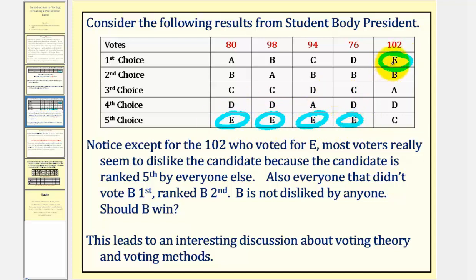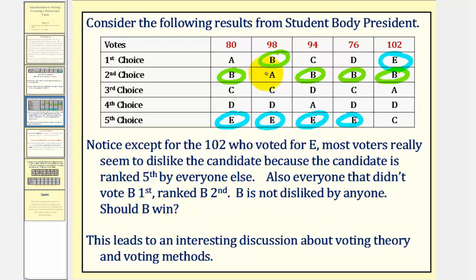If we compare candidate E to candidate B, notice how 98 people voted B as their first choice — only four less than E — but everyone else that didn't vote B first ranked B second. So we could say that B is not disliked by anybody, so maybe that means that B should win. It's situations like these that lead to interesting discussions about voting theory and voting methods.